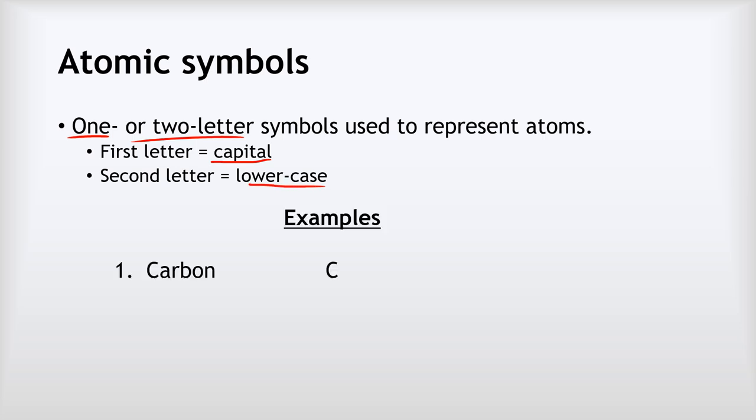Let's look at some examples. For example, carbon has the symbol capital C. It is definitely not a lowercase c. If you write that lowercase c in an exam that's wrong because that's not the symbol. The symbol is a capital C.